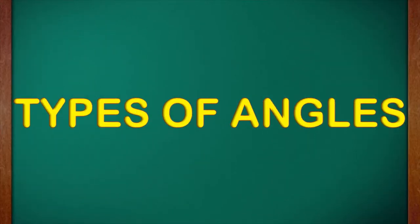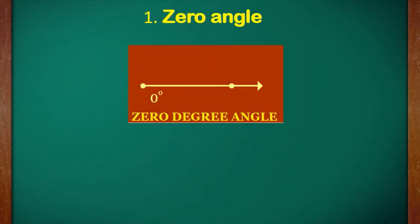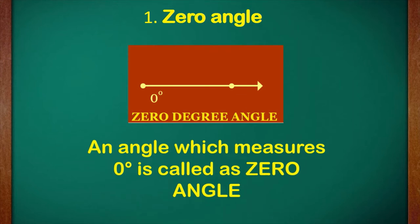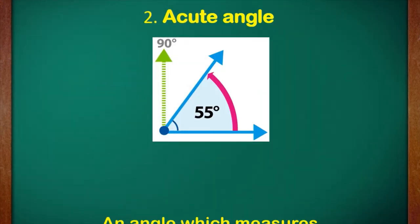Now in this standard we are going to study a few more types of angles. The first new angle is zero angle. An angle which measures zero degree is called a zero angle. It measures zero degree, which means both the arms of the angle are facing on one side only — it has not moved at all. So this is a zero angle.